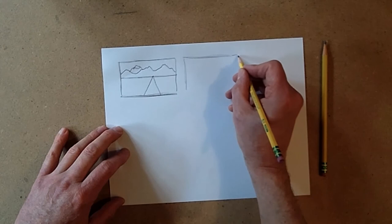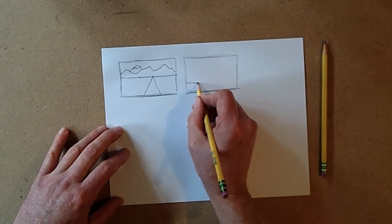You're going to do the same thing: mountains, road, horizon line. Just repeat the process. So what if we put the horizon line down here? How does that change the picture?